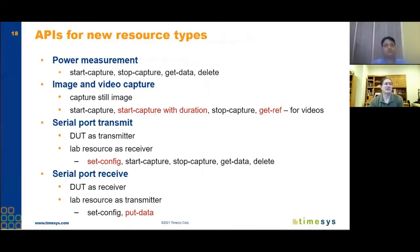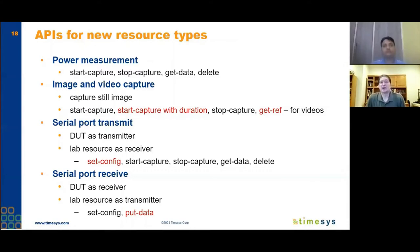Looking at how these verbs are used with different resources: for power measurement, it's basically start capture, stop, get data, and delete. As we extended the API to other resource types, we determined there were extra parameters that would be nice. For image and video capture, we added: capture a still image, start capture with a duration — so you can specify 60 seconds of video without manually stopping — and get_ref, which returns a URL for a video file without requiring download, allowing you to just leave it on the server.